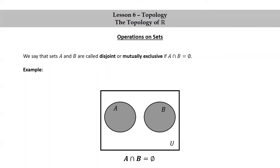Let's look at an example. The sets negative 2 to 0, this half-open interval, and the set 1 to infinity, this infinite open interval, are an example of disjoint intervals — they don't have any elements in common.